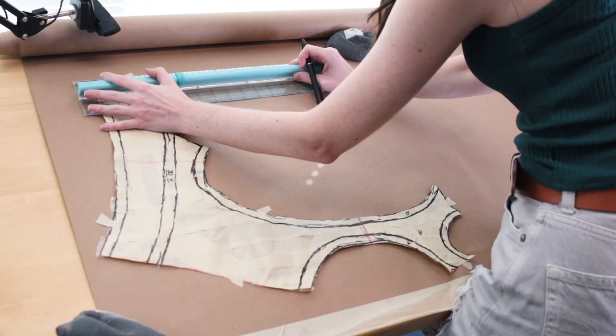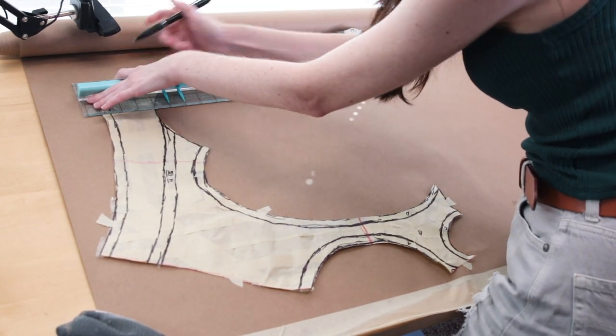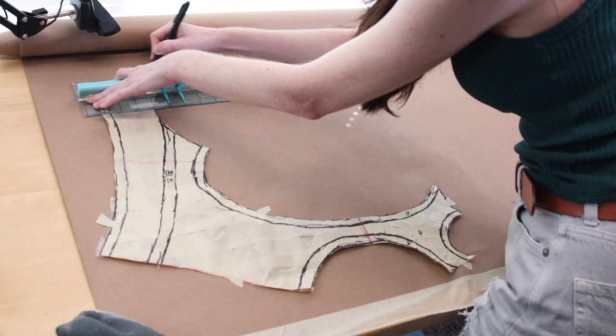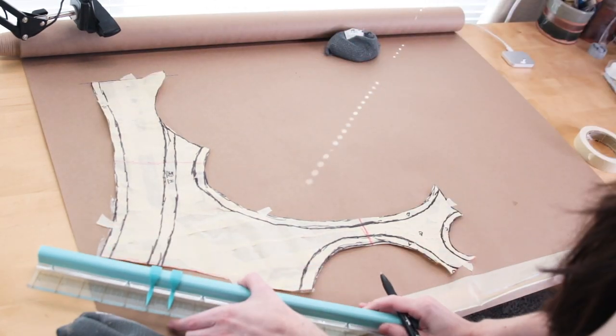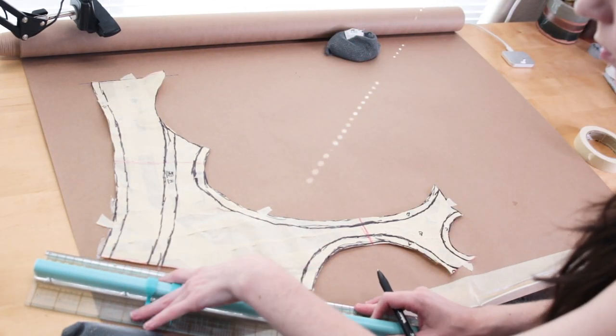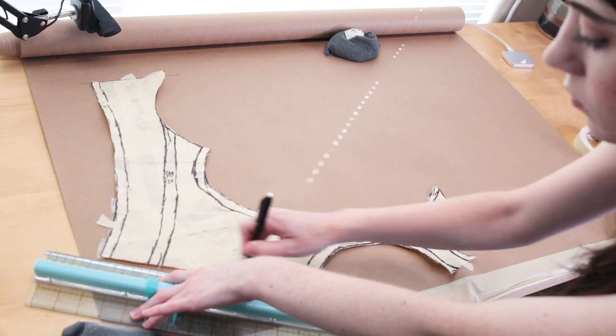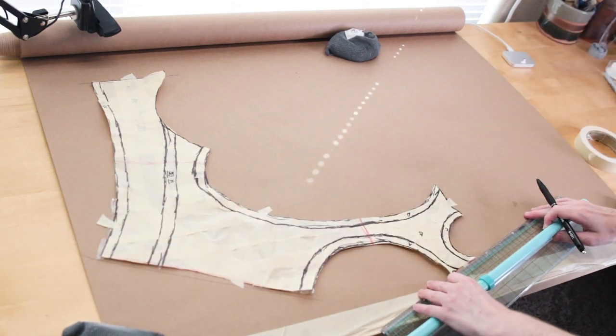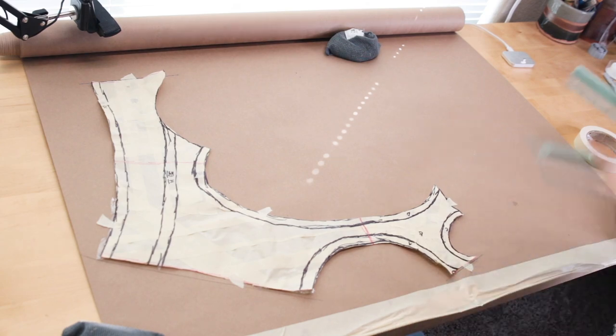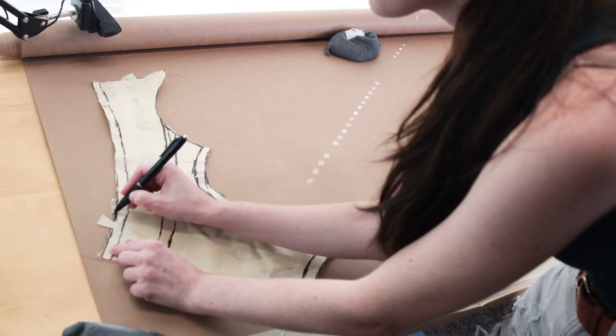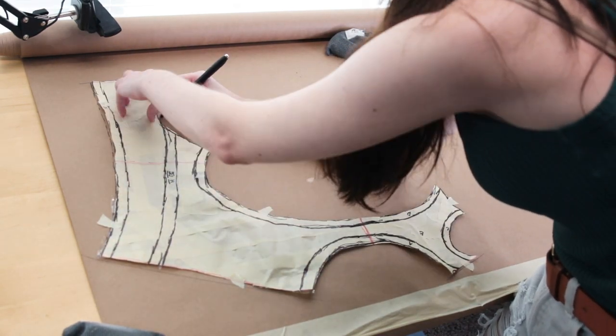With the help of a ruler, we'll mark where the center section is, which we are going to mirror to the opposite side, as well as where the back line would be. Make that a little bit nicer and cleaner and where the shoulder part would be. And afterwards I can trace the rest of the sections as well.